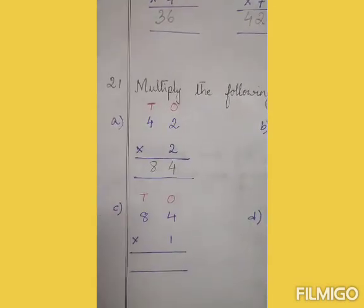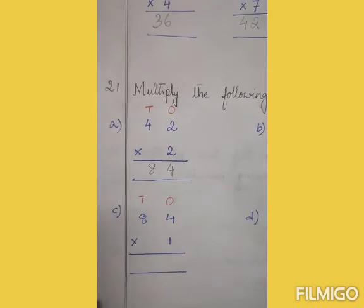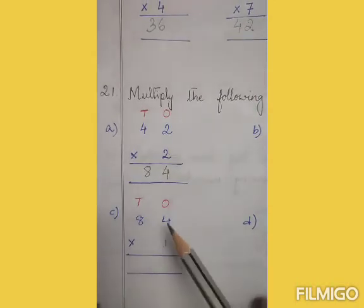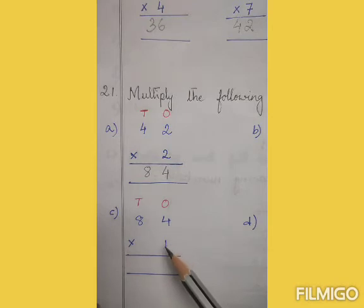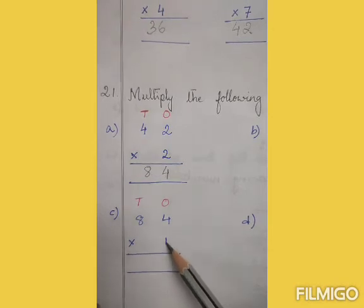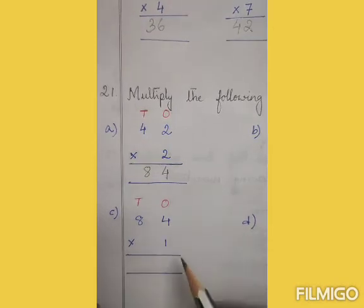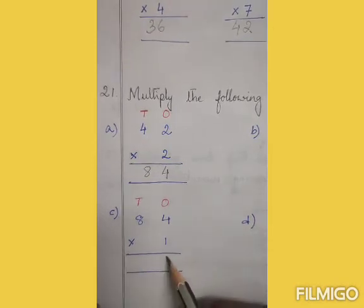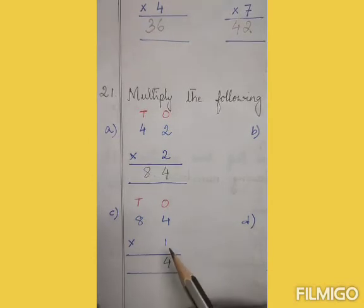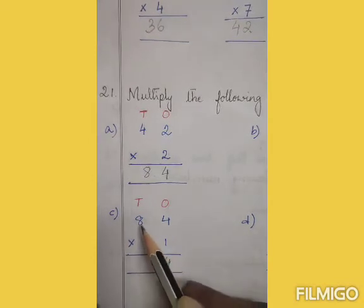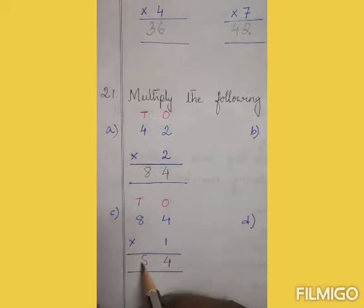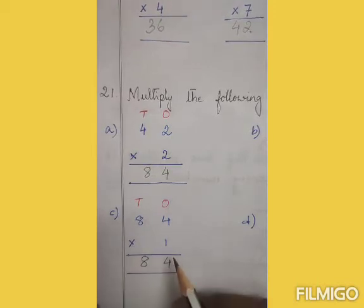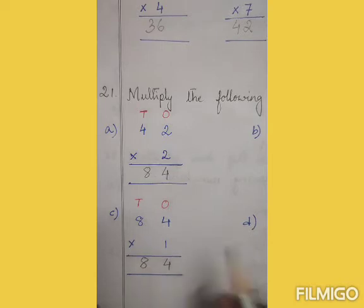Next is number C: 84 into 1. So 1 into 4 is equal to 4, and 1 into 8 is equal to 8. So 84 into 1 is equal to 84.